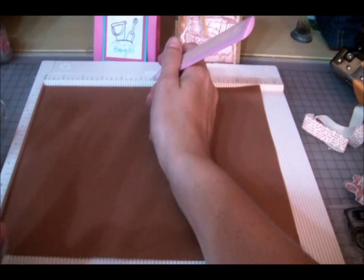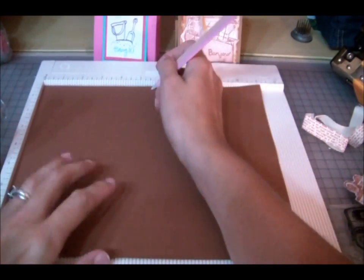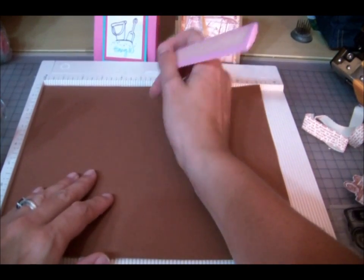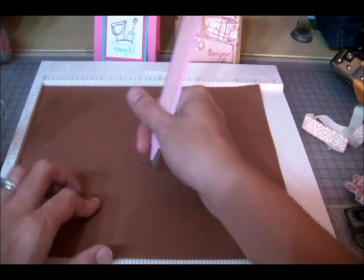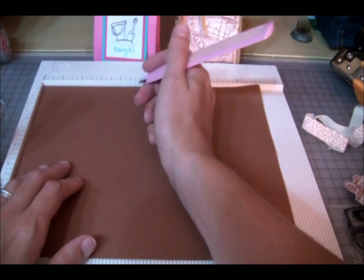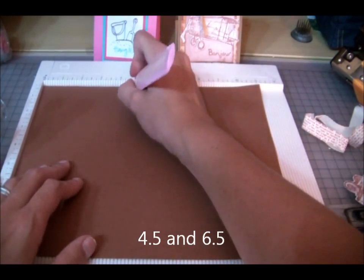Depending on how thick you want your paper depends on how sturdy your little box is. So I'm using cardstock and I'm going to make my short scores which are along my long side. My shortest scores are going to be at 4.5 and 6.5.